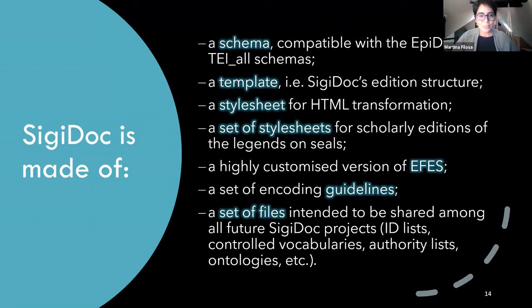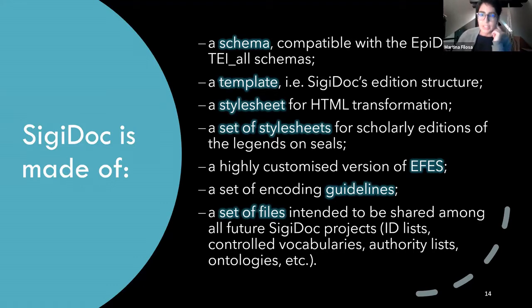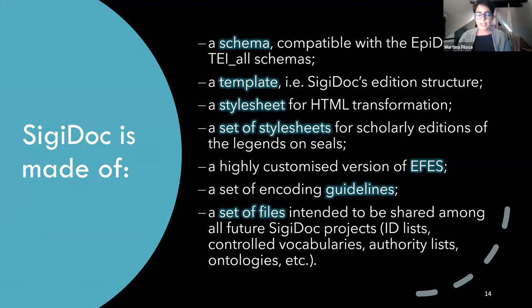SigiDoc is made of some very important components. We have a schema compatible with the EpiDoc and TEI All schemas. We have a template — the edition structure. We have a stylesheet for HTML transformation and a set of stylesheets for the scholarly edition of seals. We have a highly customized version of the EFES platform, a set of encoding guidelines, and a set of files intended to be shared among future SigiDoc projects: ID lists, controlled vocabularies, authority lists, and ontologies.